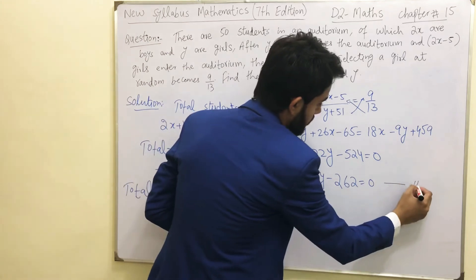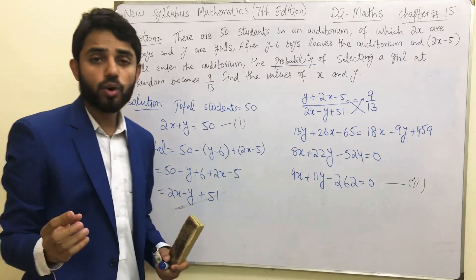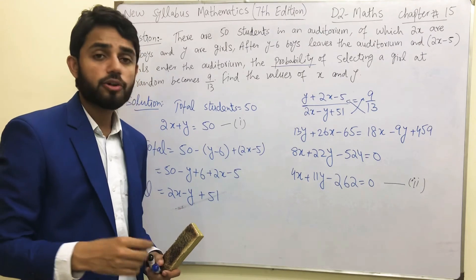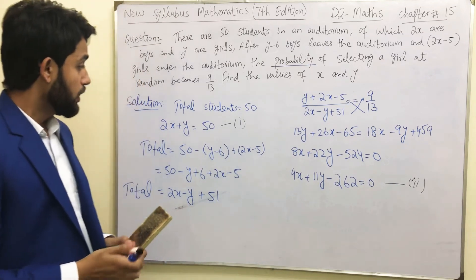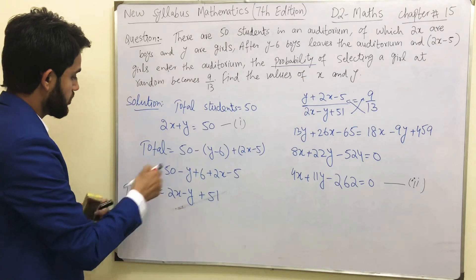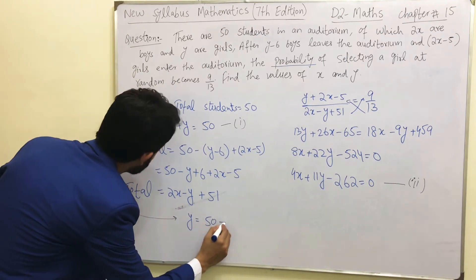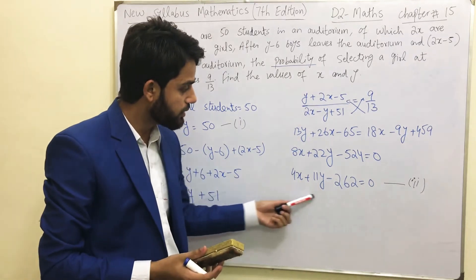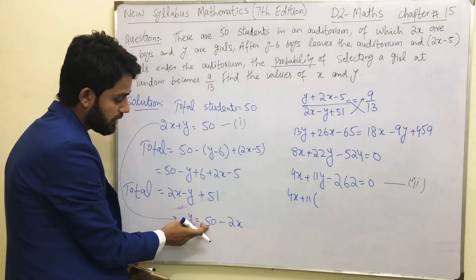We now have two equations: equation 1 is 2x + 5y = 50, and equation 2 is 4x + 11y − 262 = 0. To solve these simultaneously, we will use the substitution method. From equation 1, express y in terms of x: y = 50 minus 2x. Substitute this value of y into equation 2, so the entire equation becomes in terms of x only.